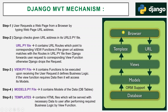To request a webpage, we open a browser — that is the first step. Then we type a website address. That means we are requesting a web server for a page. The browser is called the frontend, and the web server is called the backend.